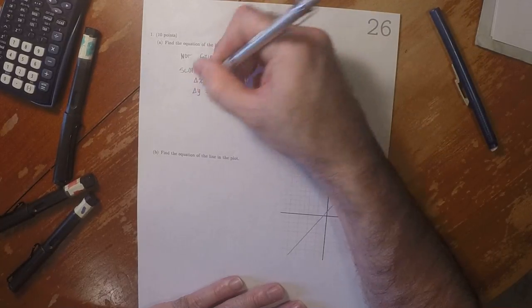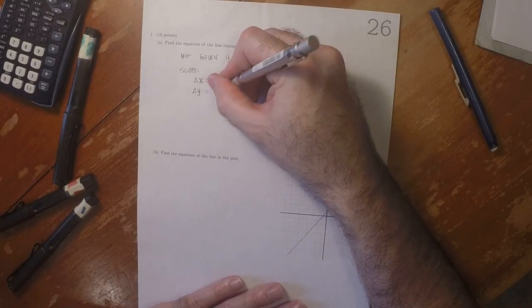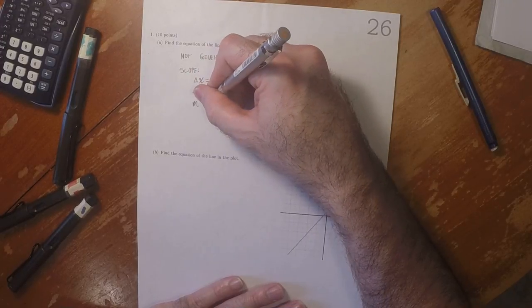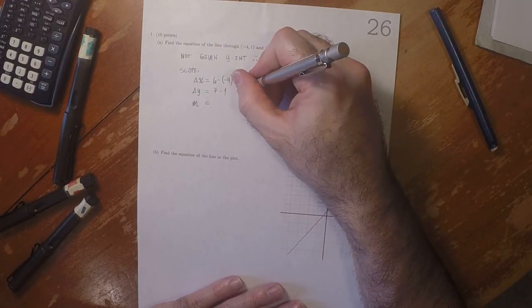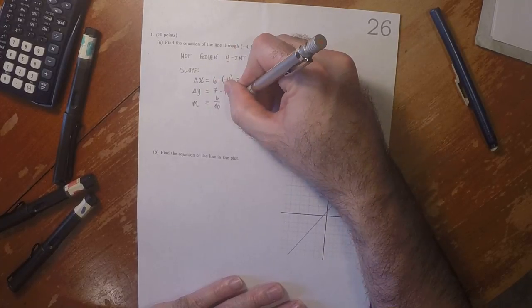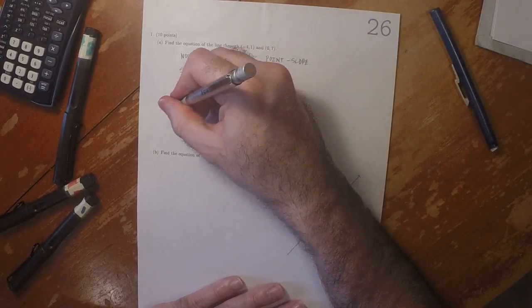the change in y is 7 minus 1, which is 6. So the slope is 6 over 10, which is 3 over 5. Now for the equation,